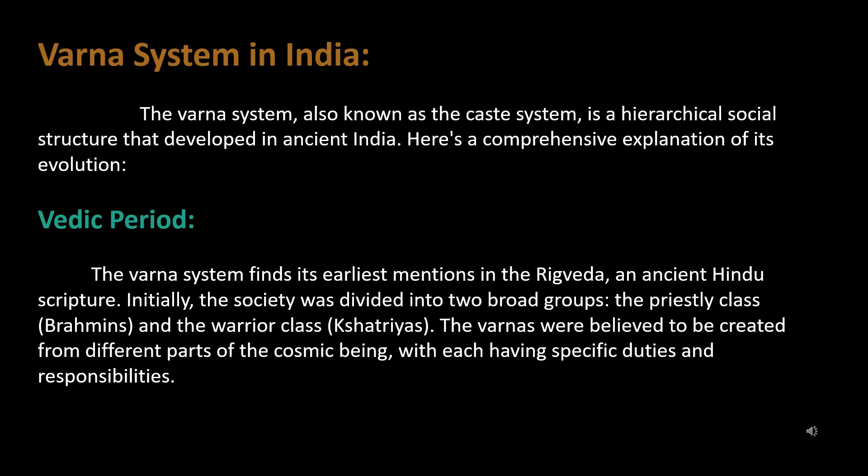The Varna System, also known as the caste system, is a hierarchical social structure that developed in ancient India. The Varna System finds its earliest mentions in the Rig Veda, an ancient Hindu scripture. Here is a comprehensive explanation of its evolution.